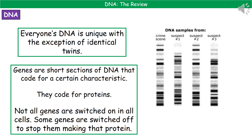Every bit of DNA can be divided up into shorter sections called a gene. Genes are actually just sections of DNA that code for a certain characteristic. So you have a gene for eye color, genes for hair color, and genes for your skin color. The reason they code for these characteristics is because they actually code for a protein.